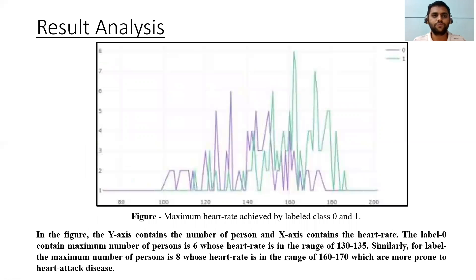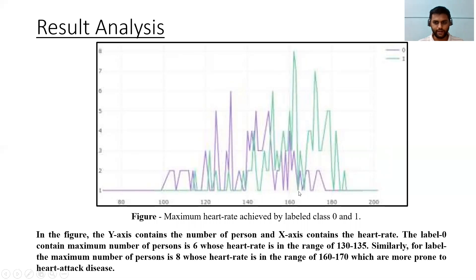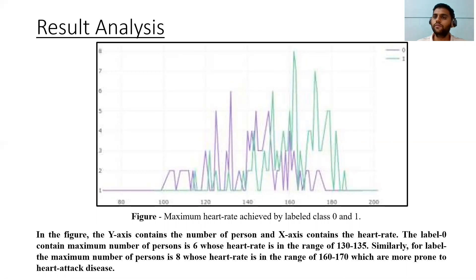This is our proposed model. Now for result analysis: we have collected data and improvised our technique. In this figure, the y-axis contains the number of persons and the x-axis contains the heart rate. There are two labels — label zero and label one. For label zero, the maximum number is six, where heart rate is in the range of 130 to 135. For label one, the maximum number of persons is eight, with the heart rate in the range of 160 to 170. According to our estimations, people in the range of 160 to 170 are severely prone to heart attack disease.